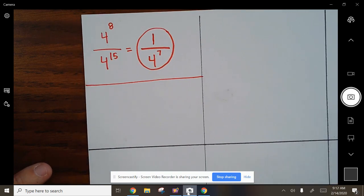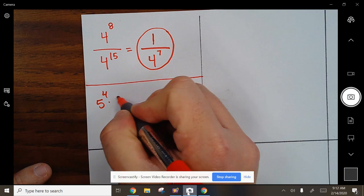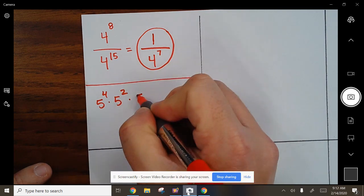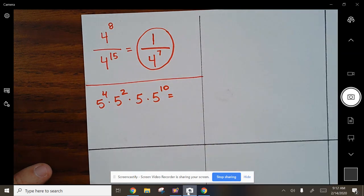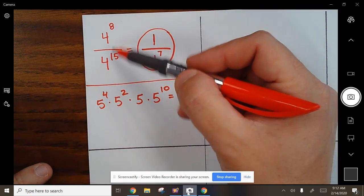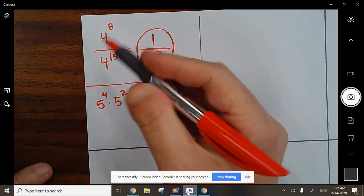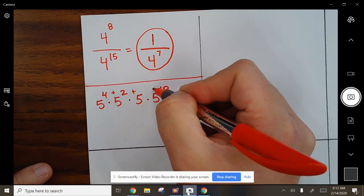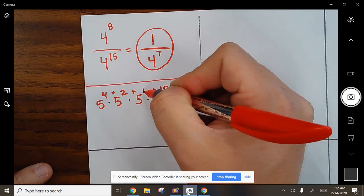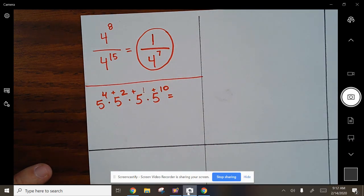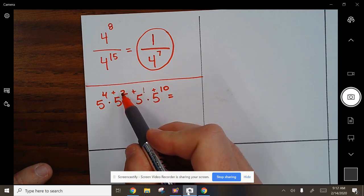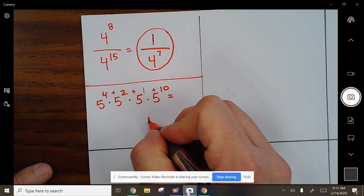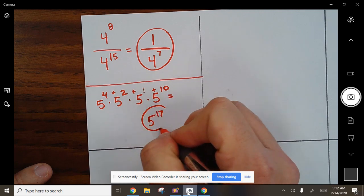Next one: 5 to the 4th times 5 to the 2nd times 5 times 5 to the 10th. Now look at this, what are you going to do? This one was subtracting when we're dividing. This one's multiplying, so we're going to add. But nothing's here except an invisible 1, so 10 plus 1 is 11, plus 2 more is 13, plus 4 is 17. 5 to the 17th power.